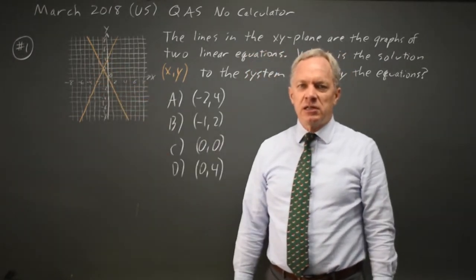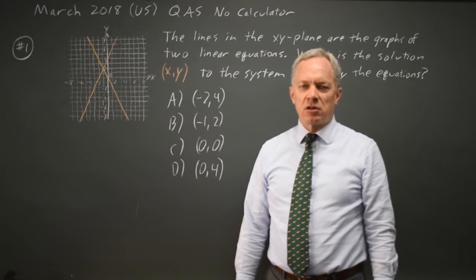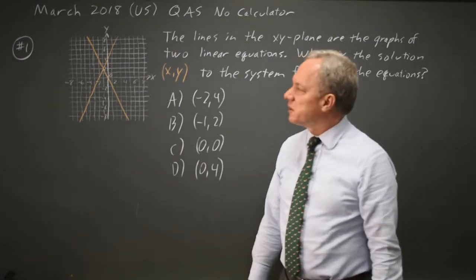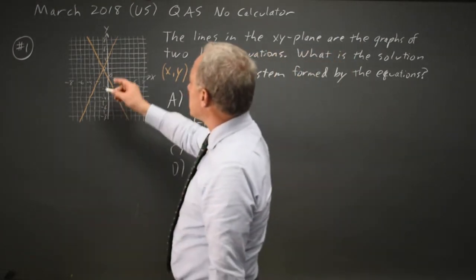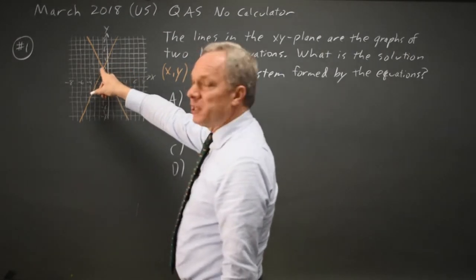The solution is a point on all the equations graphed. In this case, it has to be on both equations. And we find the point of intersection right here.